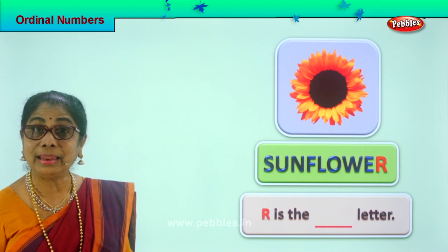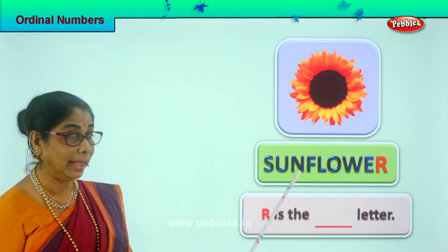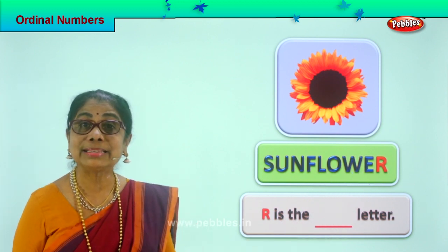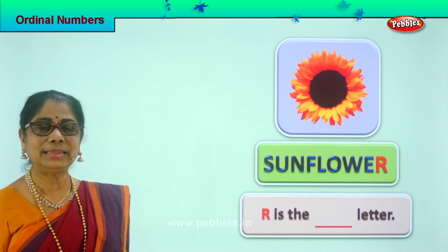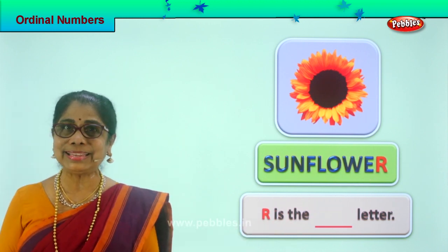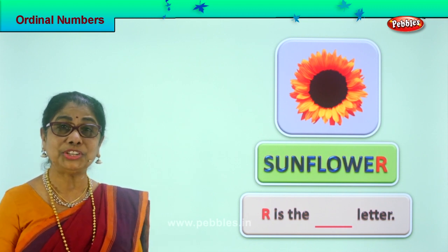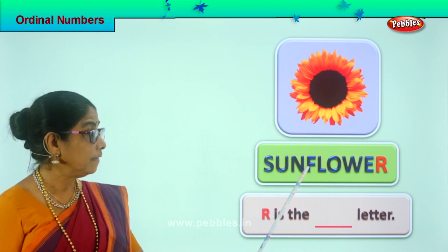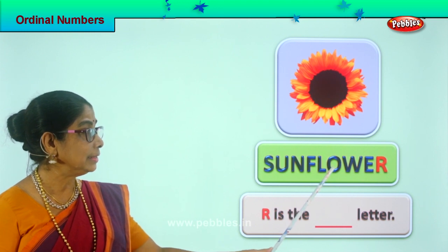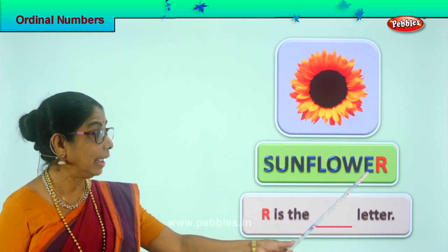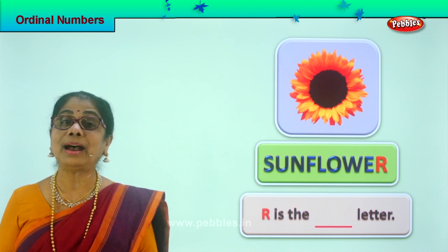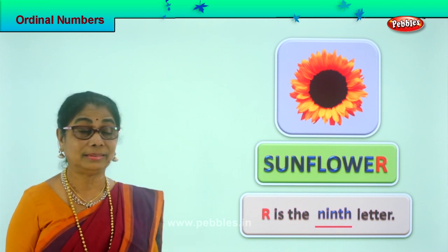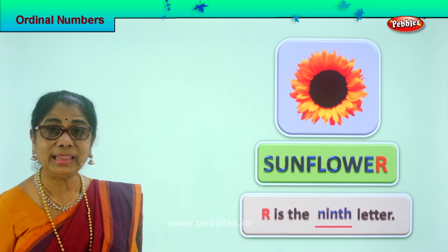Shall we take another picture? Look — you have a beautiful lovely yellow sunflower! The biggest flower. Let's spell sunflower: S-U-N-F-L-O-W-E-R. Which is the letter that is colored? R. Now in ordinal numbers, what is the position of R? First, second, third, fourth, fifth, sixth, seventh, eighth — R is the ninth letter.